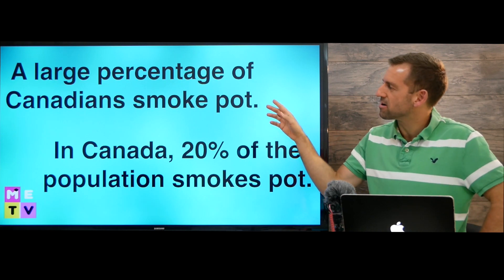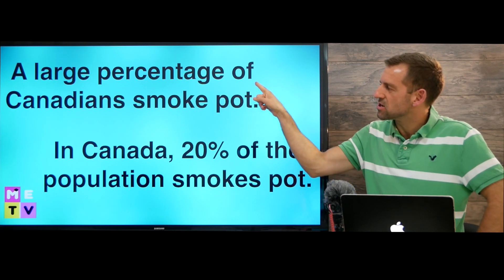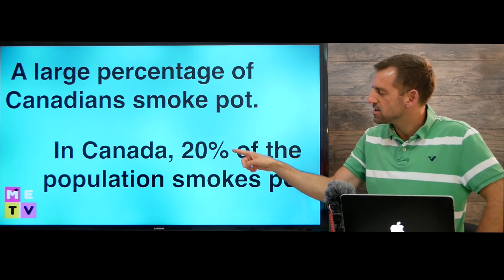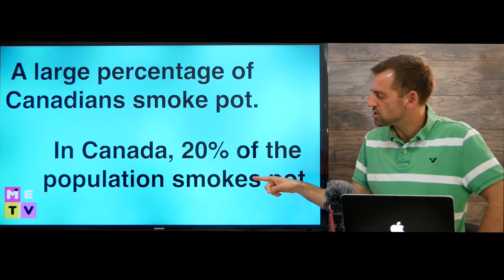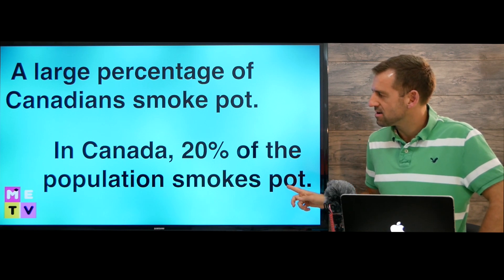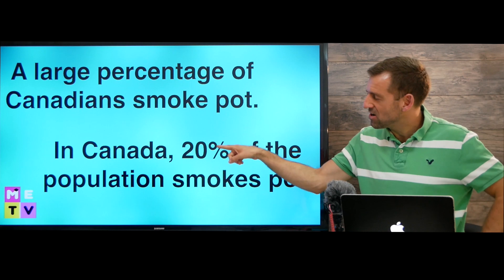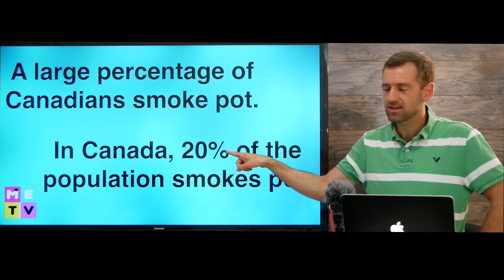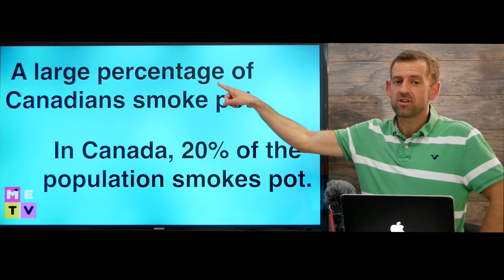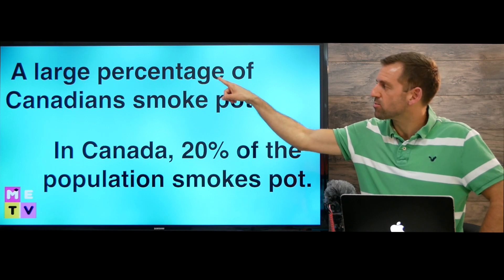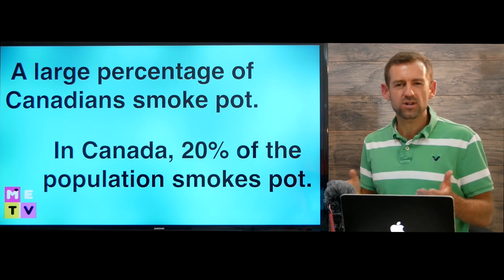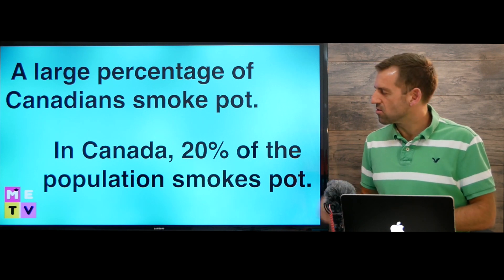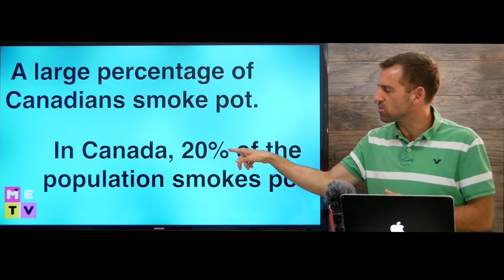I'm going to give you an example here. 'A large percentage of Canadians smoke pot.' 'In Canada, 20% of the population smokes pot.' Do you see the difference? Here we have a number, so we use the word 'percent.' Over here we don't have a number, so we use the word 'percentage' — a large percentage or a small percentage of people or of the population. Whereas here, we have a number, so we use the word 'percent.'